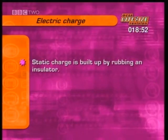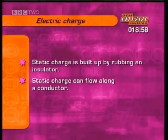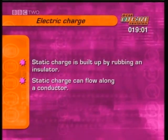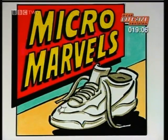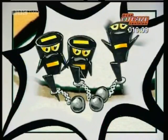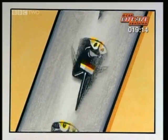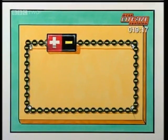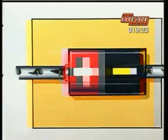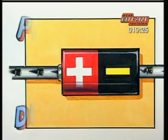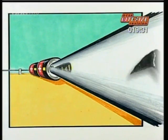So we've seen that static charge is built up by rubbing an insulator, but that given the chance, static charge will flow along a conductor. In insulators, the charges stay put — static charge. But in conductors, the charges can flow freely. If they have a complete circuit, they can keep on flowing; it's called an electric current. But to get the charges moving, they need a push — this is called potential difference. The bigger the push, the bigger the current.